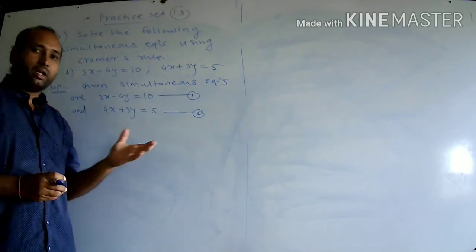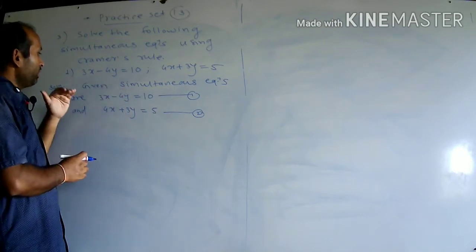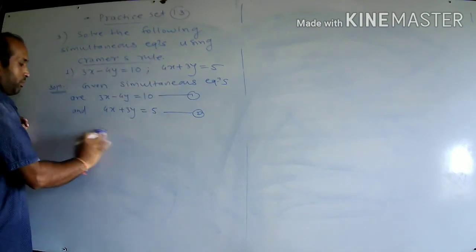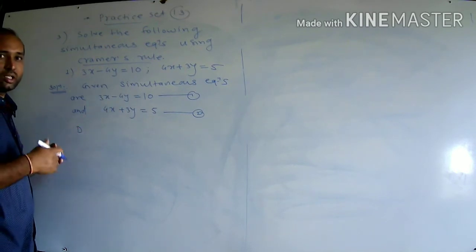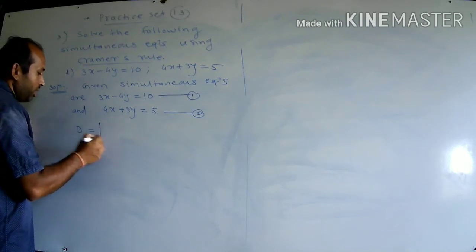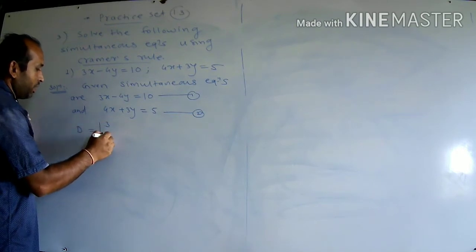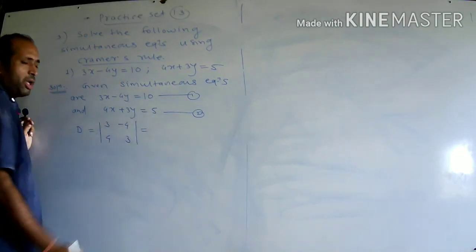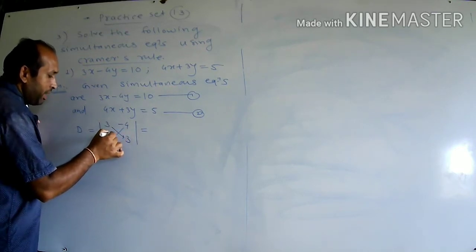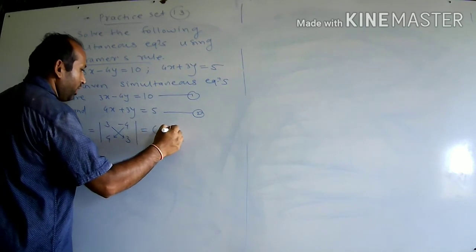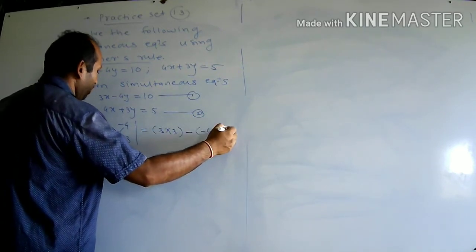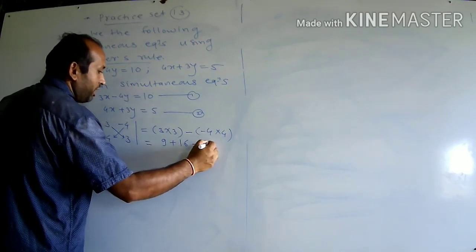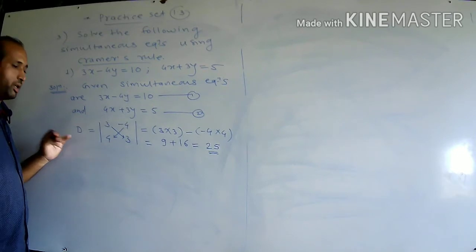We could solve this by elimination or graphical method, but here we use Cramer's Rule. Find the values of determinants D, DX, and DY. For determinant D: first column coefficients of X are 3, 4; second column coefficients of Y are minus 4, 3. Value: 3 into 3 minus (minus 4 into 4) = 9 plus 16 = 25.